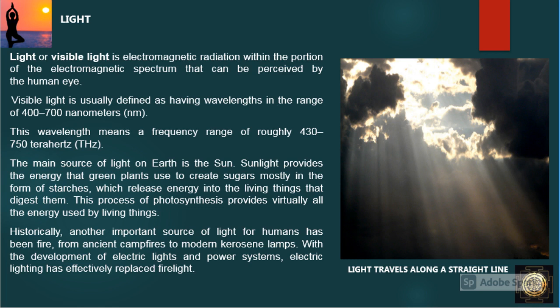This wavelength means a frequency range of roughly 430 to 750 terahertz. The main source of light on Earth is the sun.